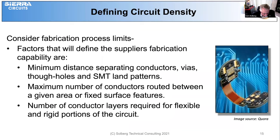In considering the fabrication process limits, factors that will define the supplier and fabrication capability are minimum distance separating the conductors, vias, through holes, and SMT land patterns; maximum number of conductors routed between a given area or fixed surface features; and the number of conductor layers required for flexible and rigid flex portions of the circuit.